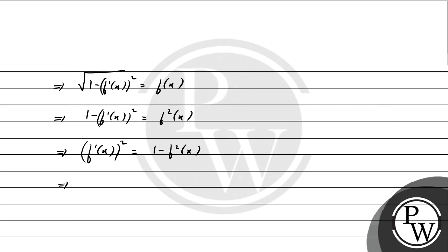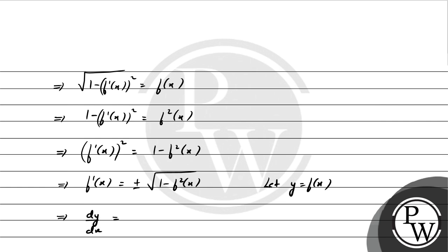Which implies f'(x) = ±√(1 − f²(x)). So this implies, अगर हम लोग यहाँ पर let करते हैं y = f(x), तो f'(x) जो है वह बनेगा dy/dx = ±√(1 − y²)।